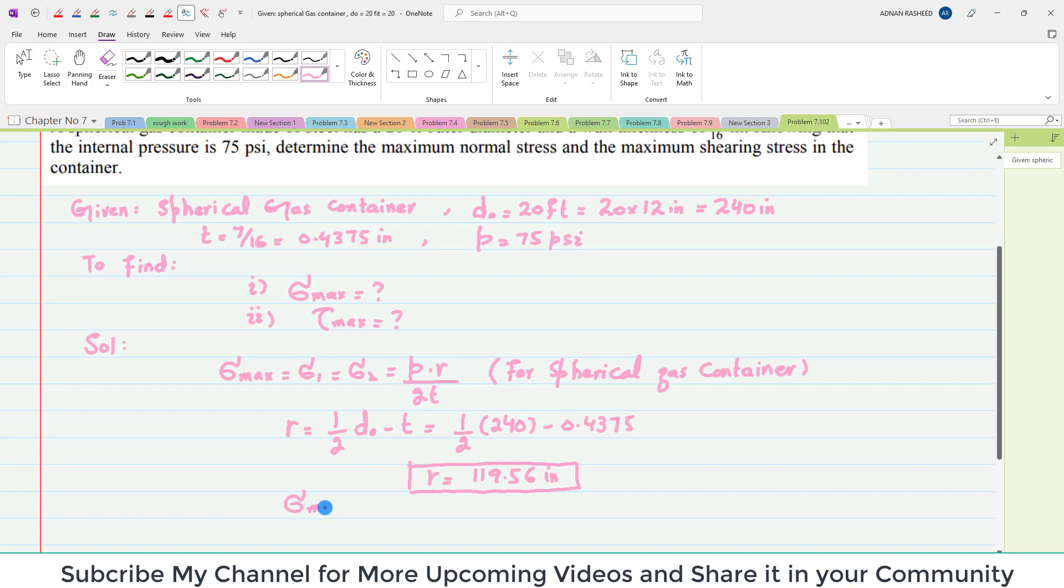Your maximum stress will equal P, which is 75 psi, times R, which is 119.56, divided by 2 times the thickness 0.4375.